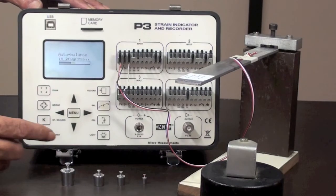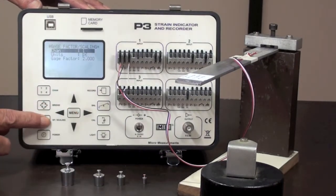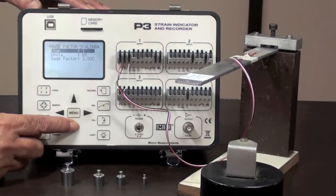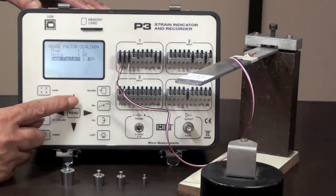The gauge is balanced for no load condition, and the gauge factor of the strain gauge, 2.120, is set on the instrument.